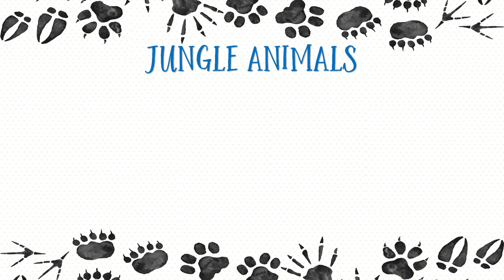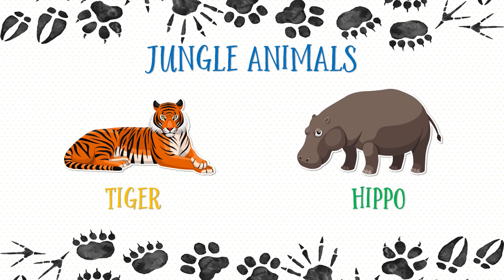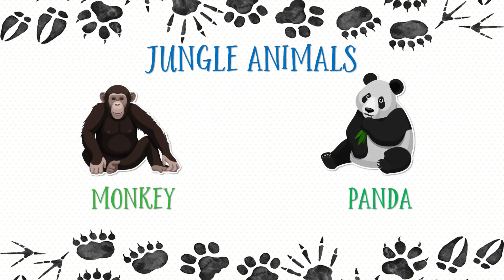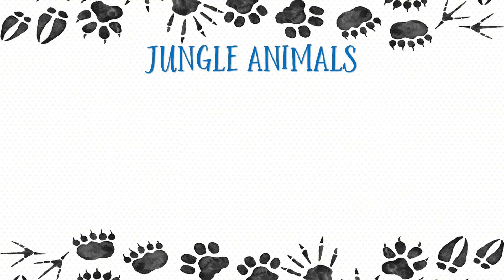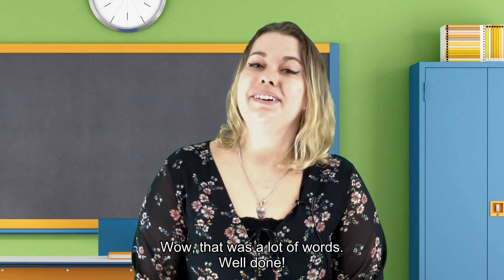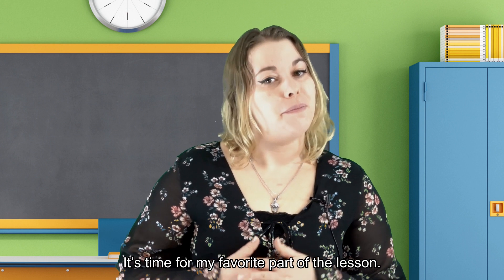The first animal is a tiger — tigers are orange, black and white. The next word is hippo — hippos are grey. Then toucan — toucans can fly. Parrot — parrots are many colors. Monkey. Panda — pandas are so cute. Frog. Snake — snakes are scary.